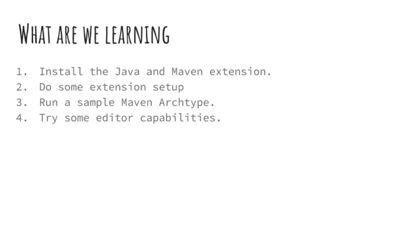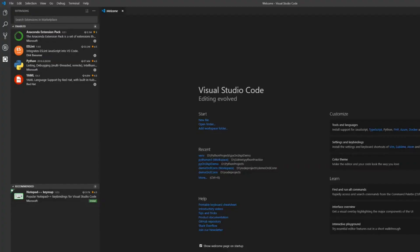VS Code is a very lightweight yet very fast — you can say a very new kind of editor — which can be used with a multitude of languages. It can be used with Java, Python, shell scripting, and all this can basically be done with small extensions that you can download from the VS Code marketplace.